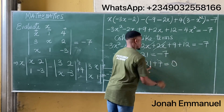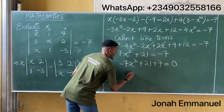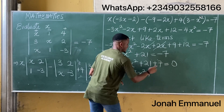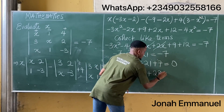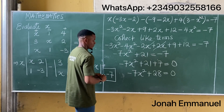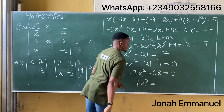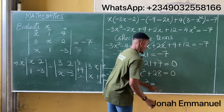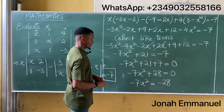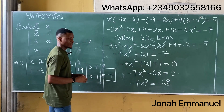So I have minus 7x squared plus 28 equals 0. Moving 28 across: minus 7x squared equals minus 28. To get x squared, I divide both sides by minus 7.